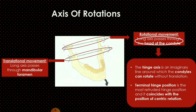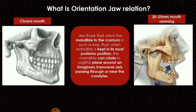Another concept is terminal hinge position, which is similar to the hinge axis but is associated with the position of centric relation. Whenever the condyle is in centric relation, the axis passing through the head of the condyle is called the terminal hinge axis, and the position of the condyle at that time is called the terminal hinge position.